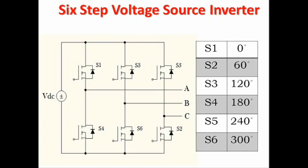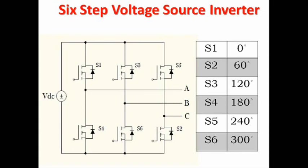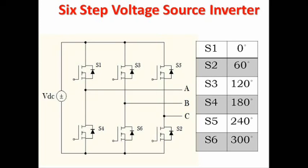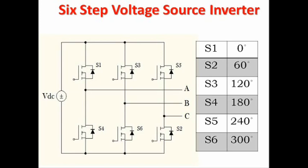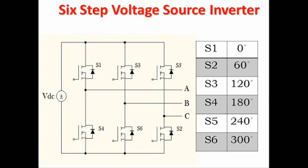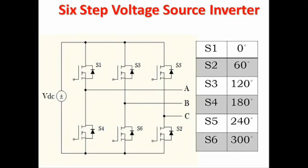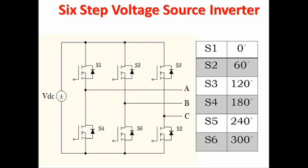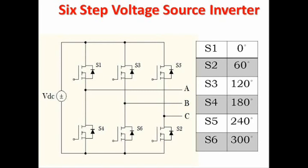Before analyzing the firing angle, we have to be very clear about what a firing angle is. The firing angle is the electrical angle at which the gate pulses arrive and make the MOSFET conduct. The MOSFET is switched on whenever gate pulses are received. The angle at which the gate pulses arrive is called the firing angle. In this inverter, we do not switch on all 6 switches simultaneously — each switch has its own specific turn-on time.